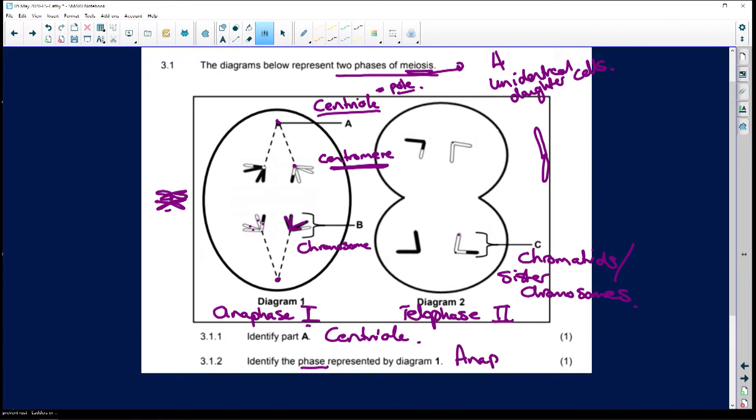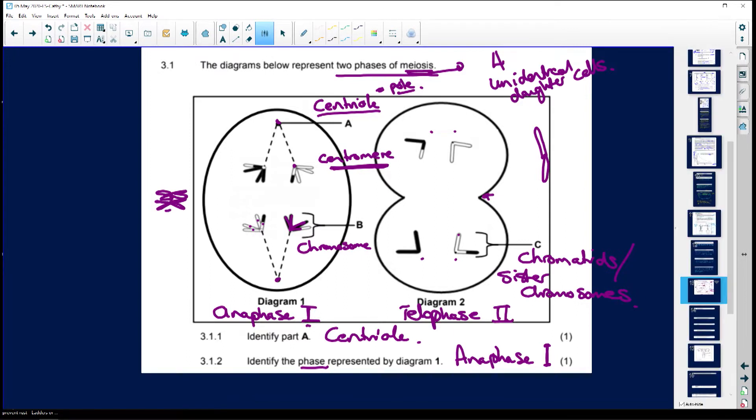Identify the phase represented in diagram one. We've already done that. It's anaphase one. Why isn't it anaphase two? Because if it was anaphase two, it would look like these guys here, except that this invagination here would not be happening.